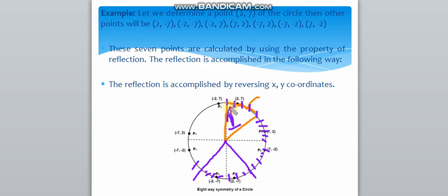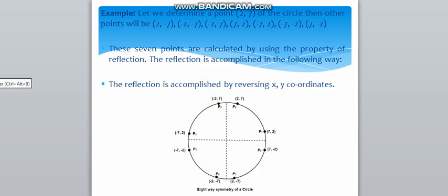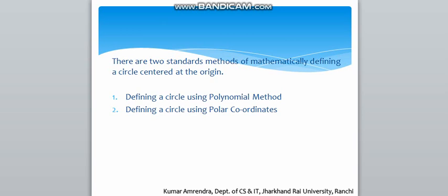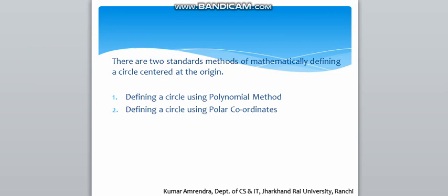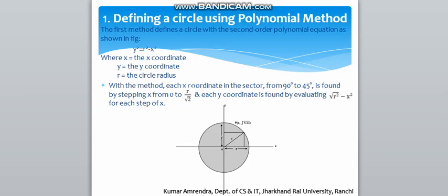According to the circle symmetry, we have to calculate only the first octant. So let's move on to defining a circle. There are two standard methods of mathematically defining a circle centered at the origin: the first one is defining a circle using the polynomial method, and the second one is defining a circle using polar coordinates.